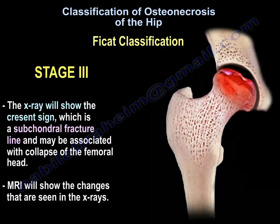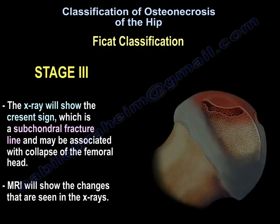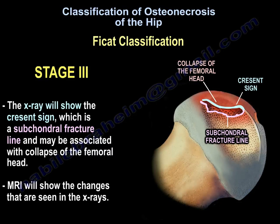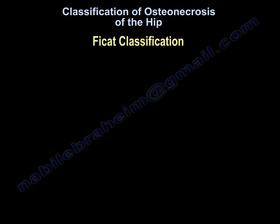Stage three: the x-ray will show a crescent sign, which is a subchondral fracture line, and may be associated with collapse of the femoral head. MRI will show the changes that are seen on the x-rays.